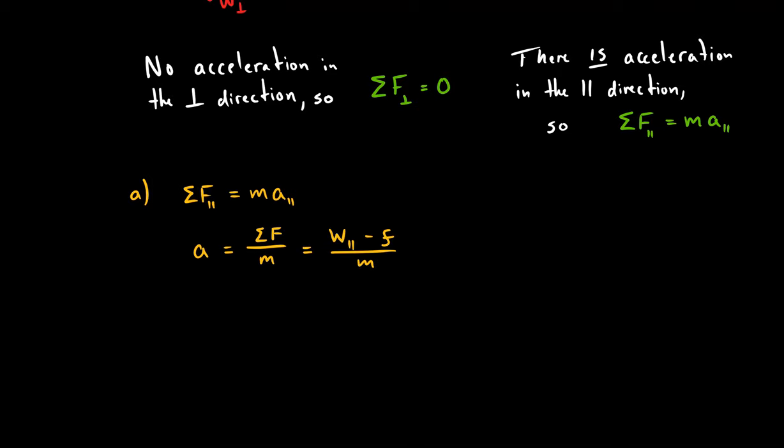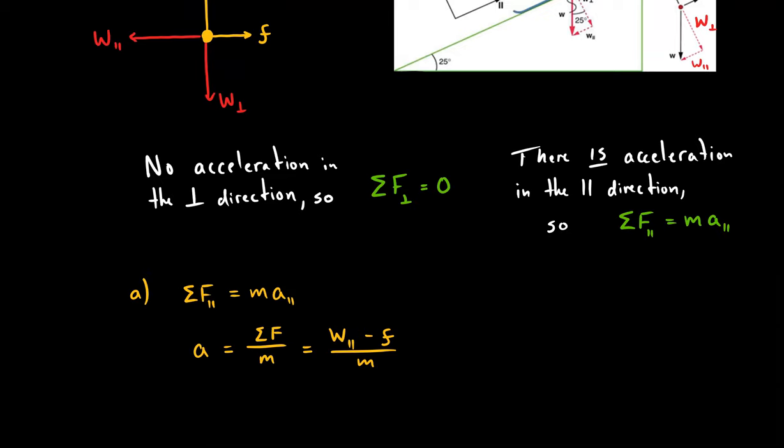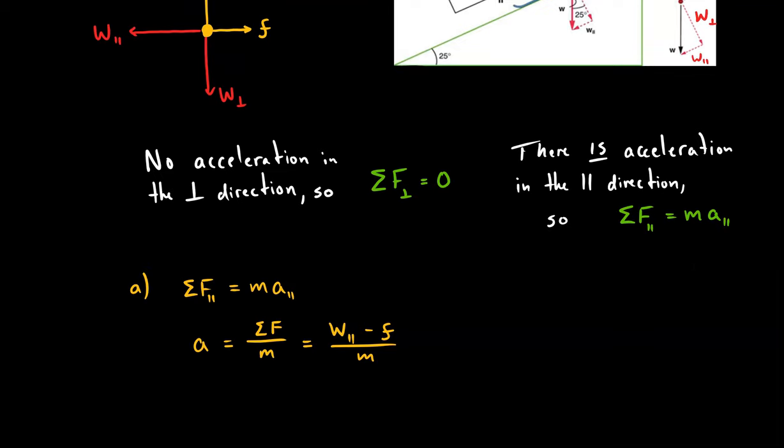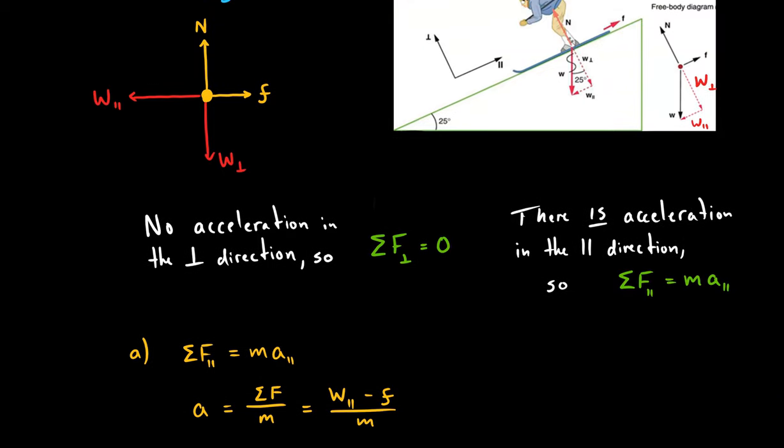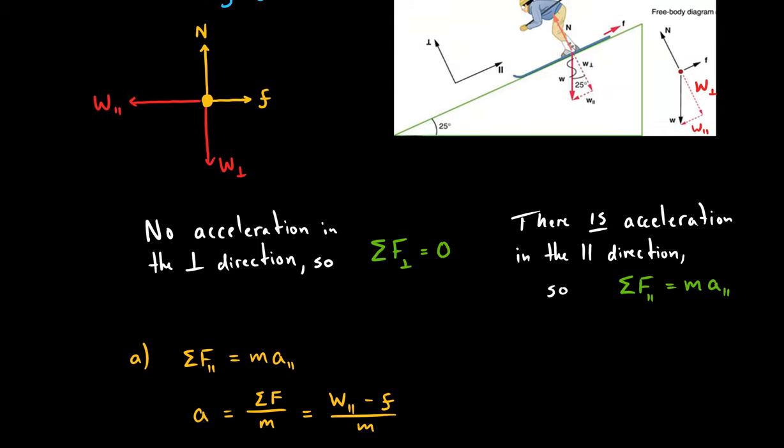Okay, we plug in all of our forces. So we have the weight in the parallel direction minus the friction force is the sum of forces in that parallel direction. So if you look up here on that force diagram, that's these two forces in the direction going down the hill. We know the skier is accelerating in the direction of the hill. So that's why just these forces are responsible for that acceleration.